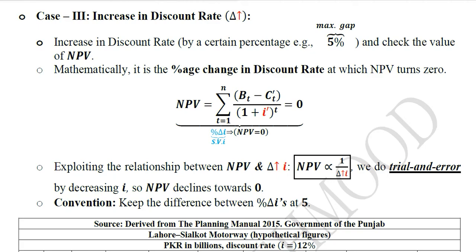We have conducted this sensitivity analysis by introducing unexpected changes in the benefits and the costs. However, discount rate is yet another factor that can be used as one of the critical elements that can affect the outcome of the project. So let us do this experiment in this video.